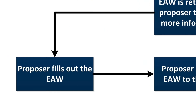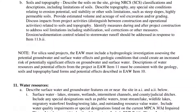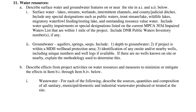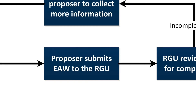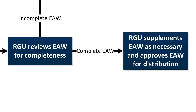The project proposer fills out the Environmental Assessment Worksheet. The EAW is a form that includes a series of questions related to the environmental impacts of the project on air, land, and water resources. The project proposer then submits the EAW to the responsible governmental unit. The RGU reviews and supplements the EAW as needed to ensure that it is complete and accurate.